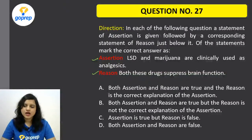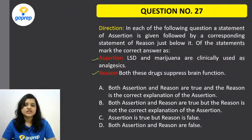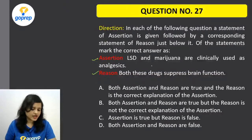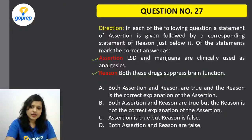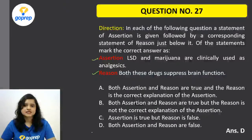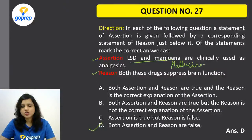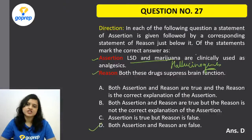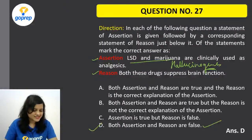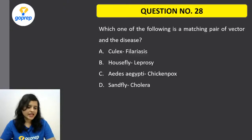Question on LSD and marijuana: are they clinically used as analgesics, and do both suppress brain function? LSD and marijuana — if you remember what type of drugs they are, you will get this correct. D is the correct option — both statements are wrong. LSD and marijuana are hallucinogens, not analgesics. So automatically both assertion and reason are false.